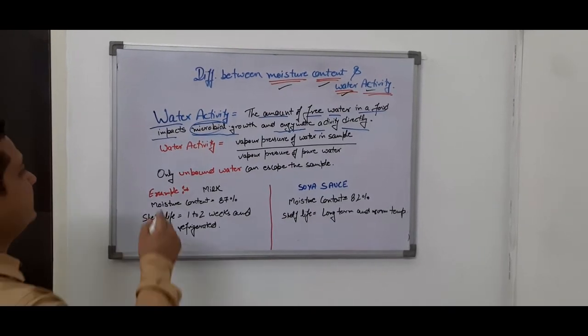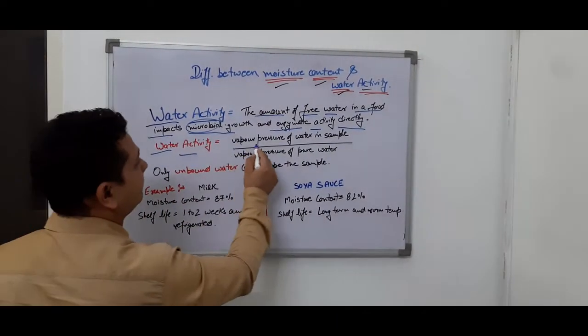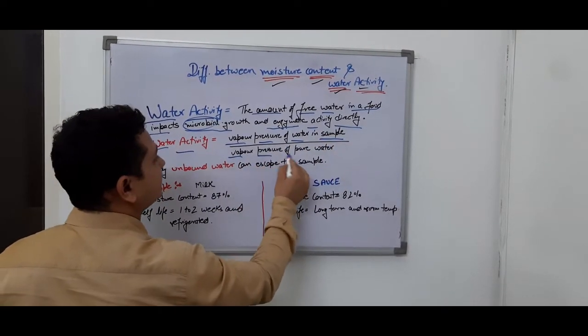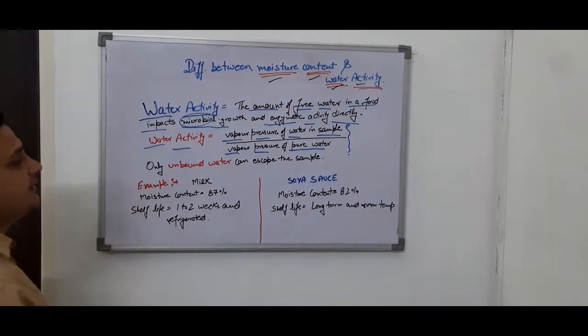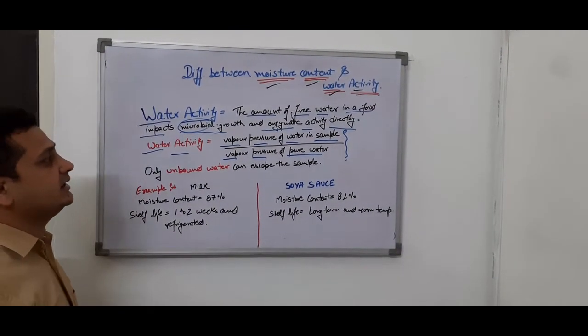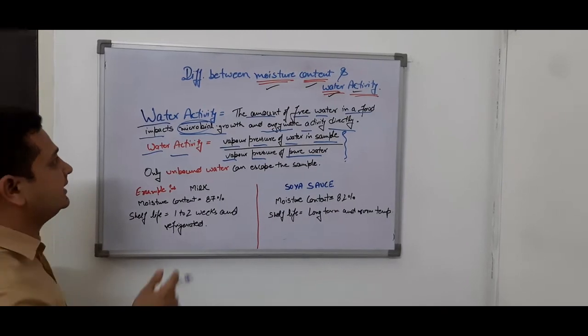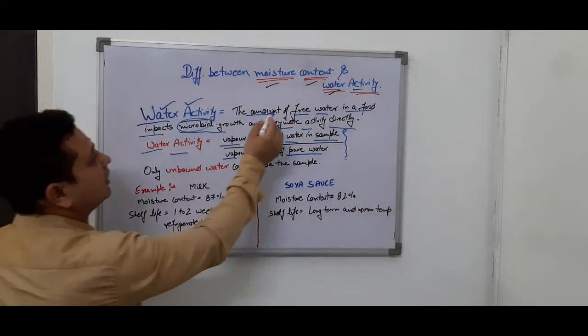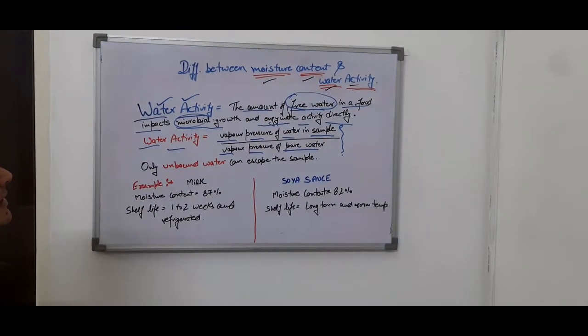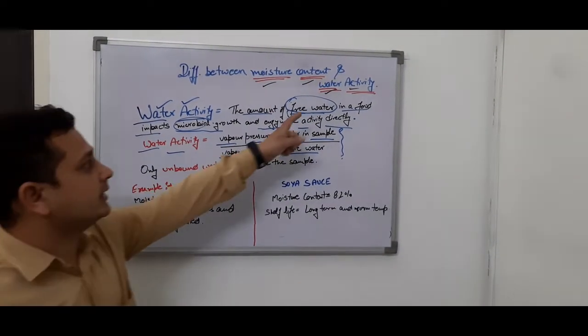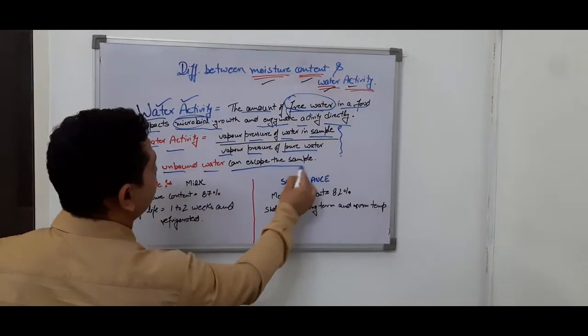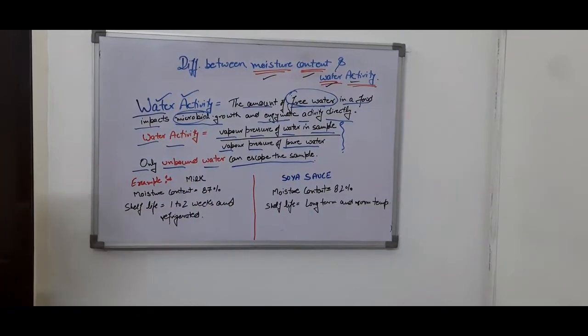Water activity is the vapor pressure of water in a sample divided by the vapor pressure of pure water. This determines the microbial reaction and chemical reaction. This is due to free water, we can call it unbound water. Only unbound water can escape from the sample.